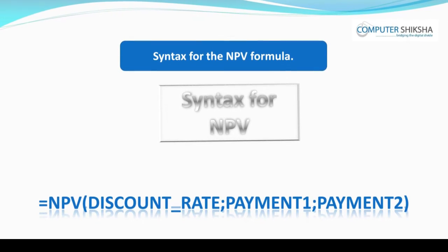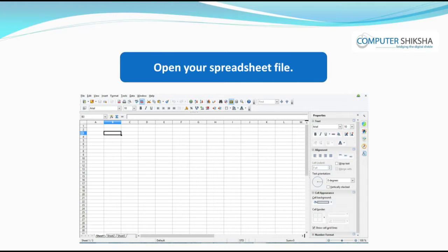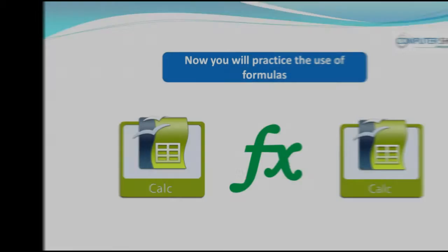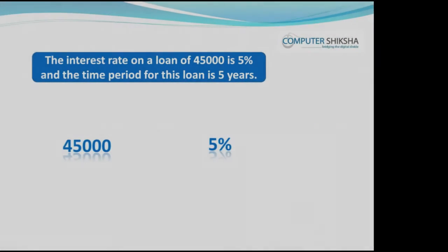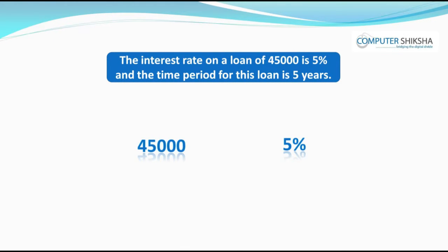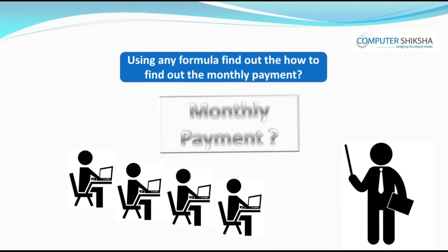Now, all of you switch on your computers and open your spreadsheet files. Look at the data being shown to you and type the same data in your sheet. You will all practice the use of formulas. The interest rate on a loan of 45,000 is 5% and the time period for this loan is 5 years. Using any formula known to you, find out the monthly payments for this loan.